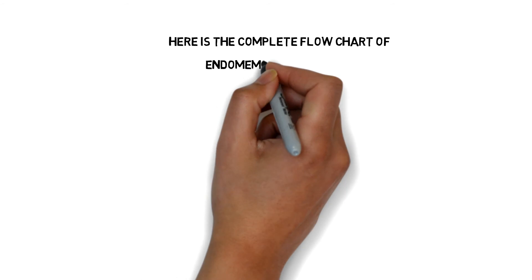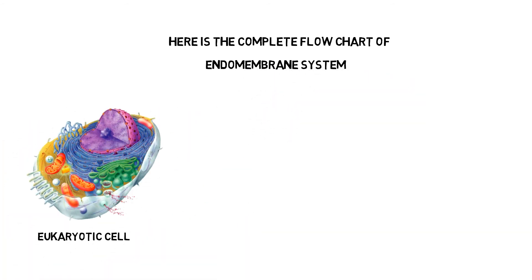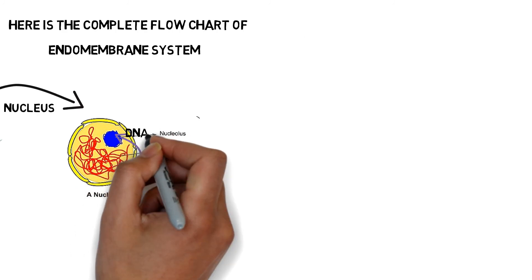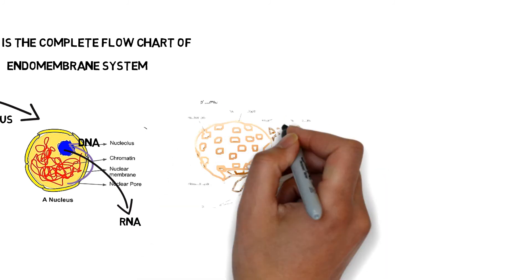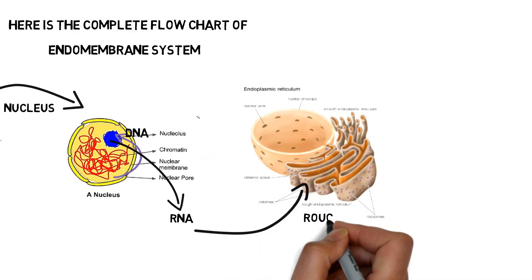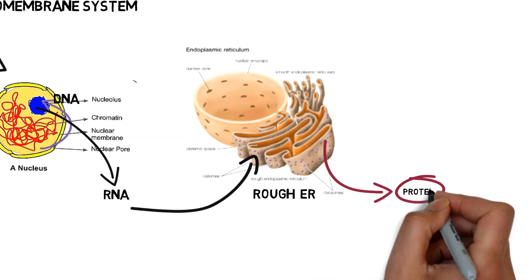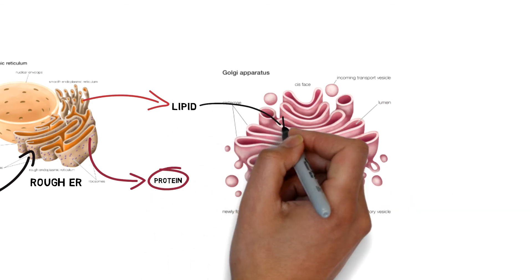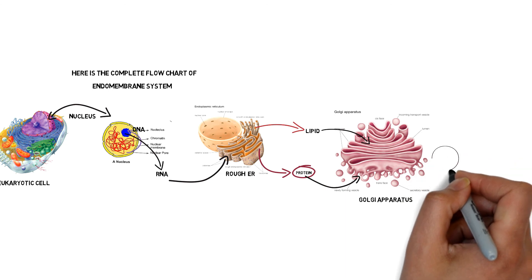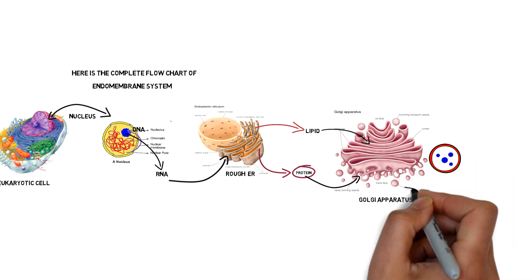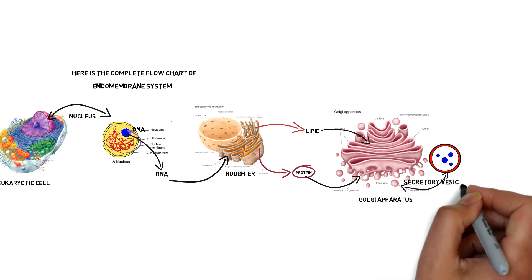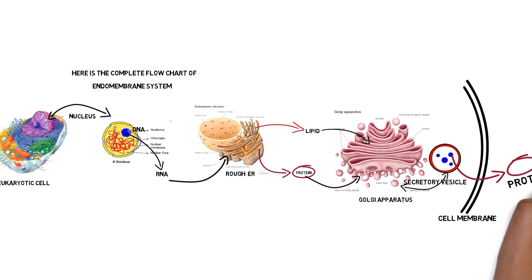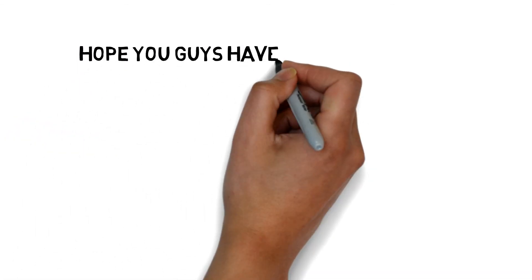Here is the complete flowchart of the endomembrane system. The eukaryotic cell has a nucleus containing chromatin filament, which goes to the nucleolus where RNA is produced from DNA. The RNA ejects through the nuclear pore and goes to the rough endoplasmic reticulum, where protein is produced due to the presence of ribosomes, while the smooth endoplasmic reticulum synthesizes lipid. The synthesized protein and lipid come to the Golgi apparatus where they are packaged, then sent out through the cell membrane via secretory vesicles containing hormones, enzymes, and other proteins.